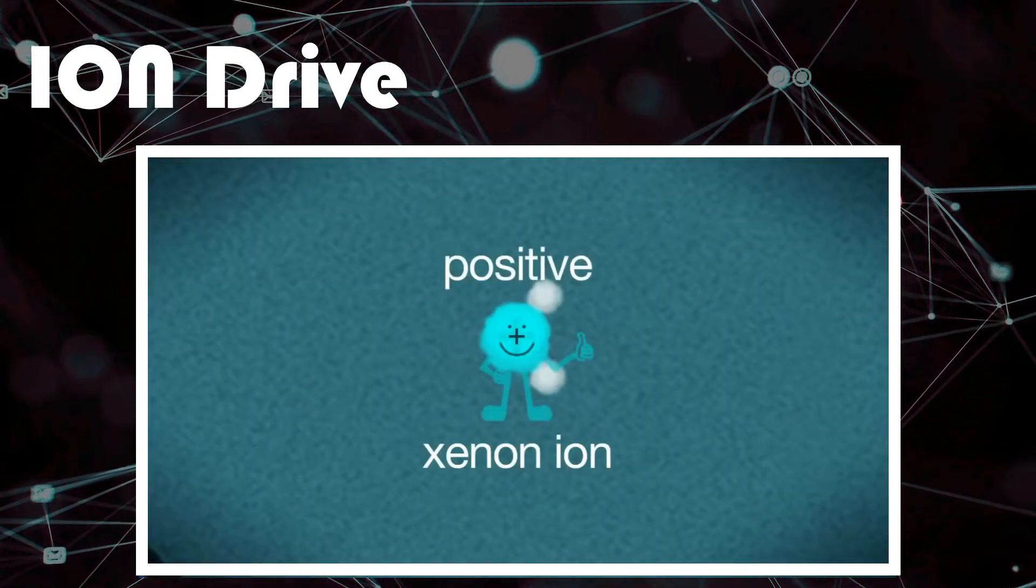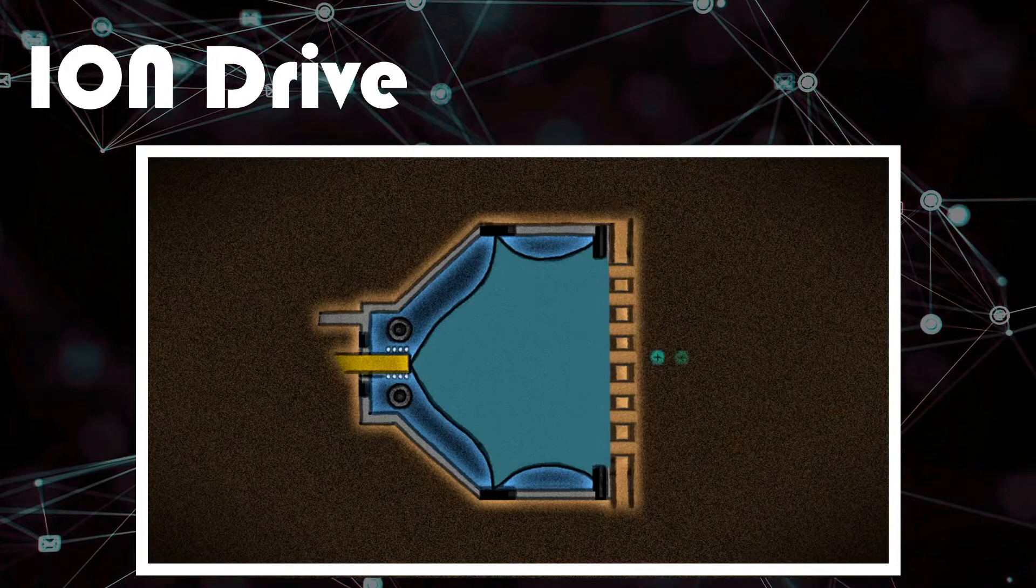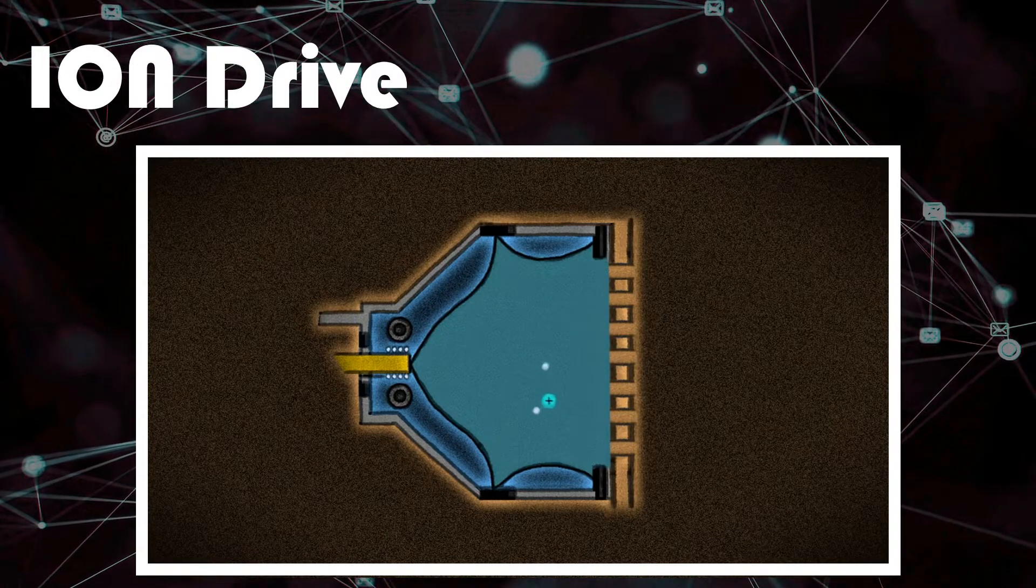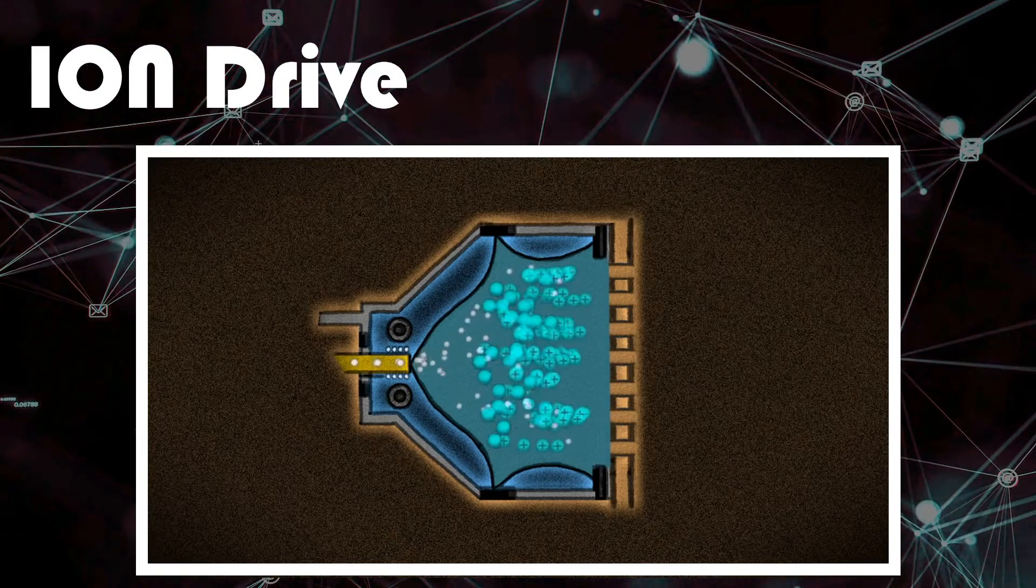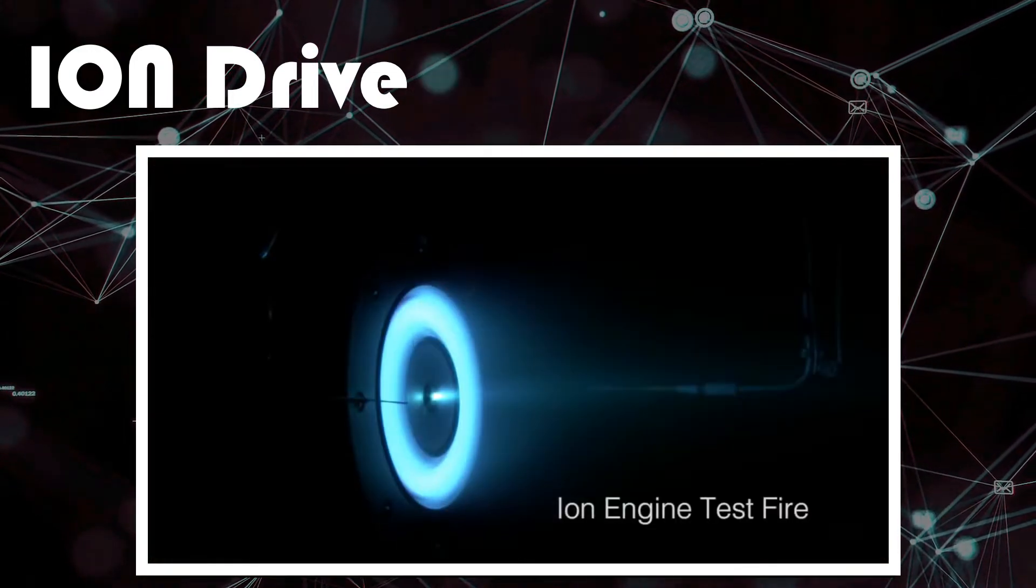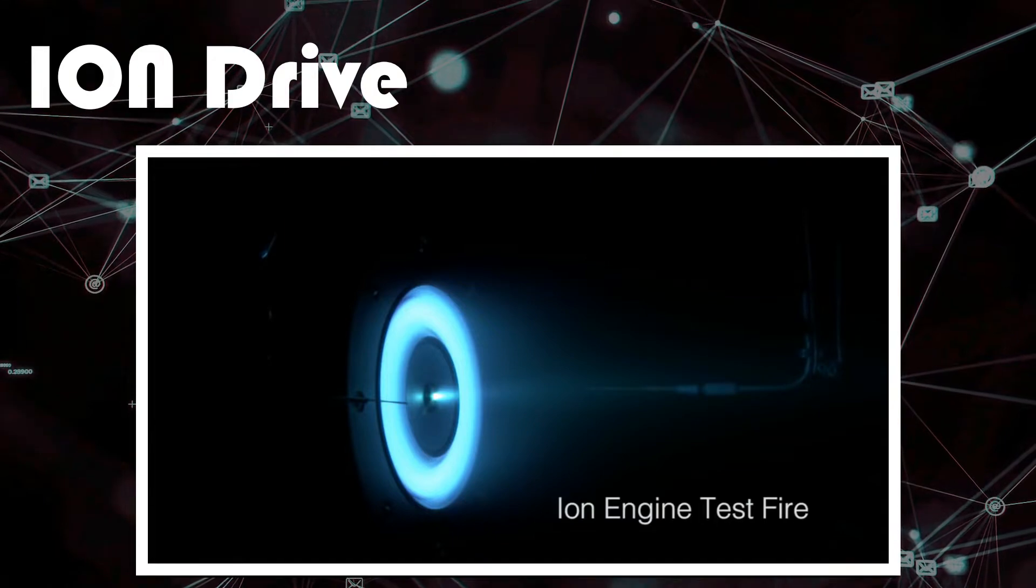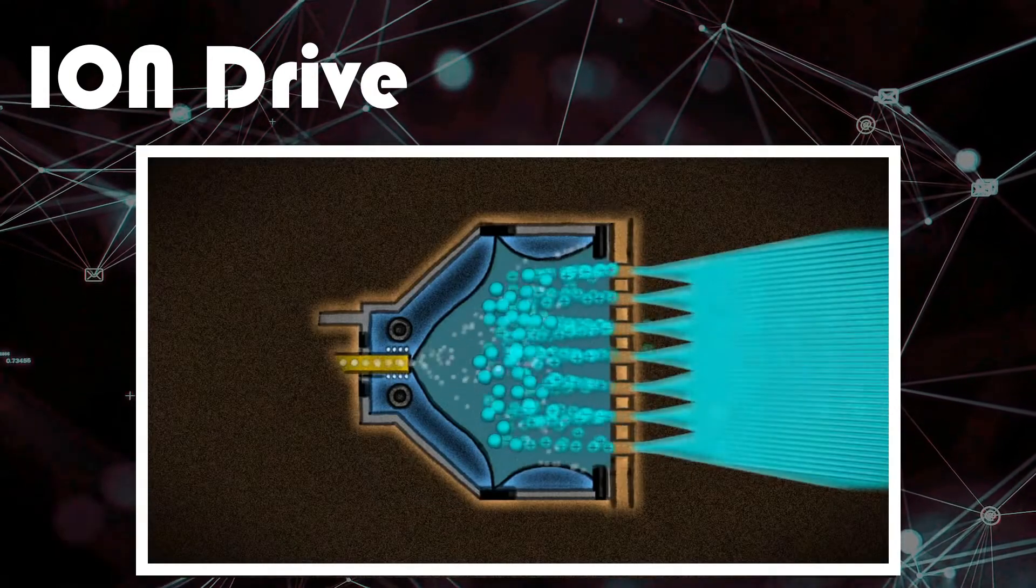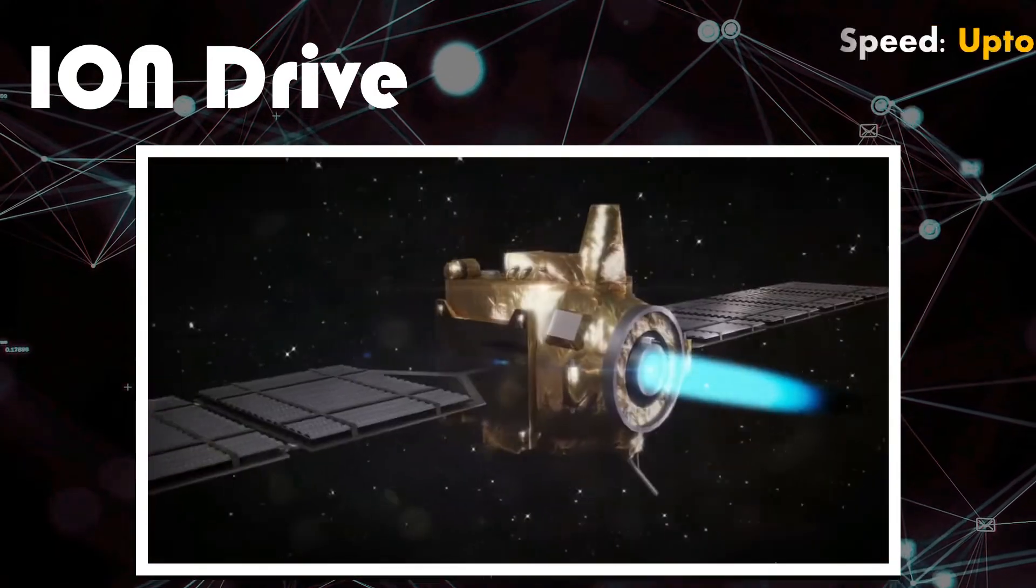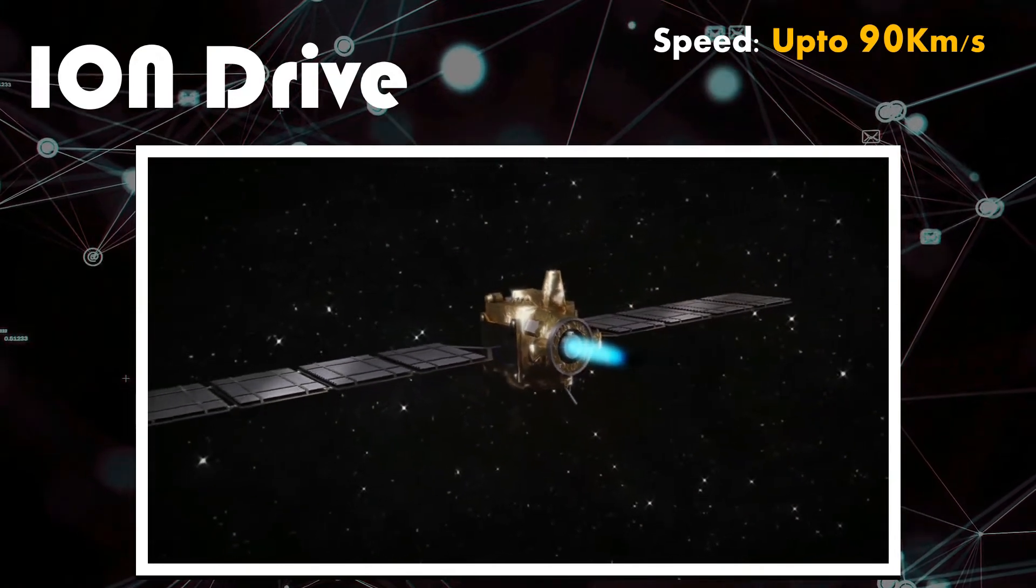Neutral gas like xenon is bombarded with electrons, which in turn creates more electrons turning them into positively charged ions. All the electrons are then contained in chamber leading to more ionization, and the positively charged ions are siphoned out, which are then accelerated by high voltage. This process creates thrust and accelerates spacecraft at speeds of up to 90 kilometers per second.